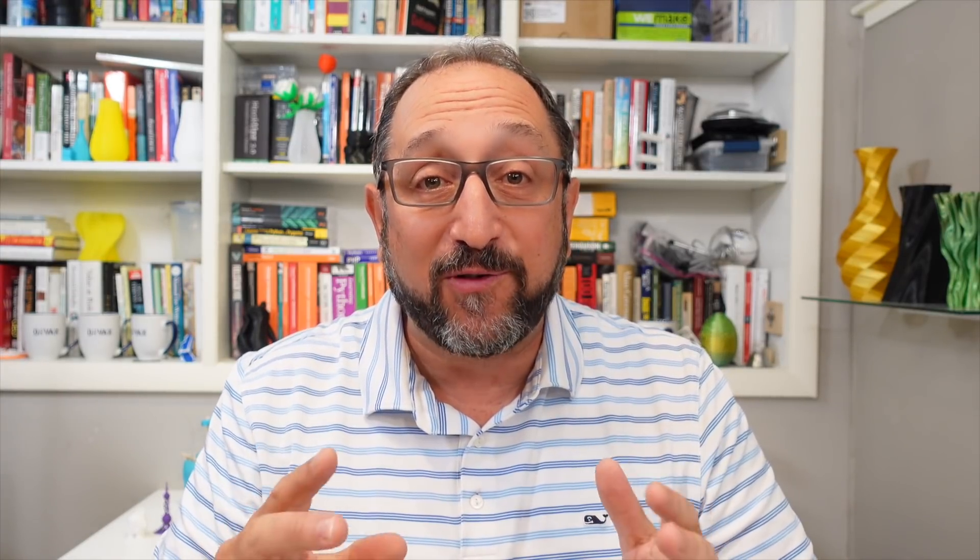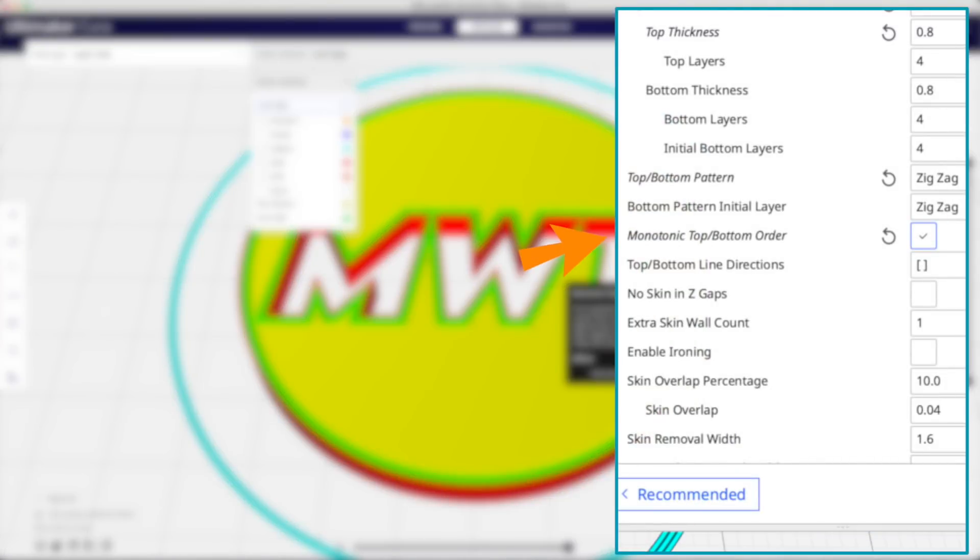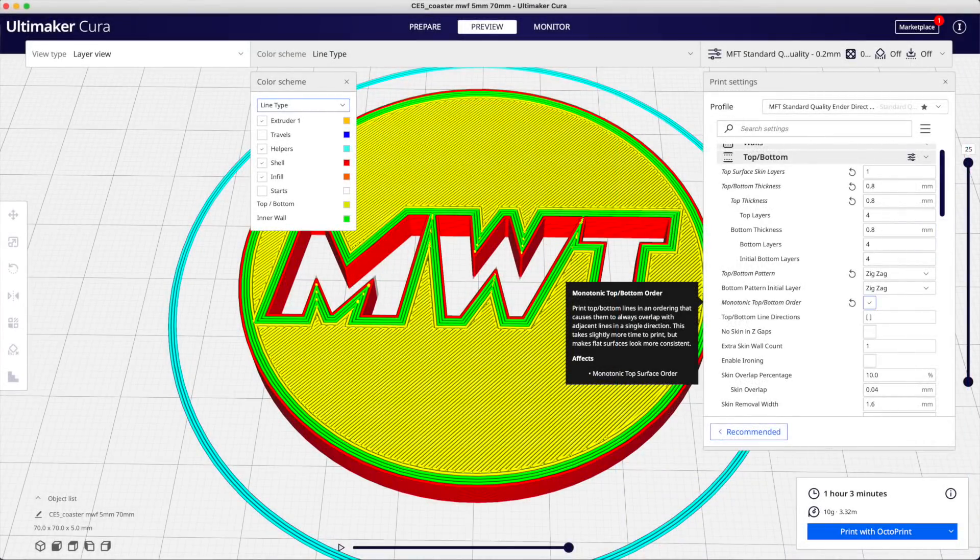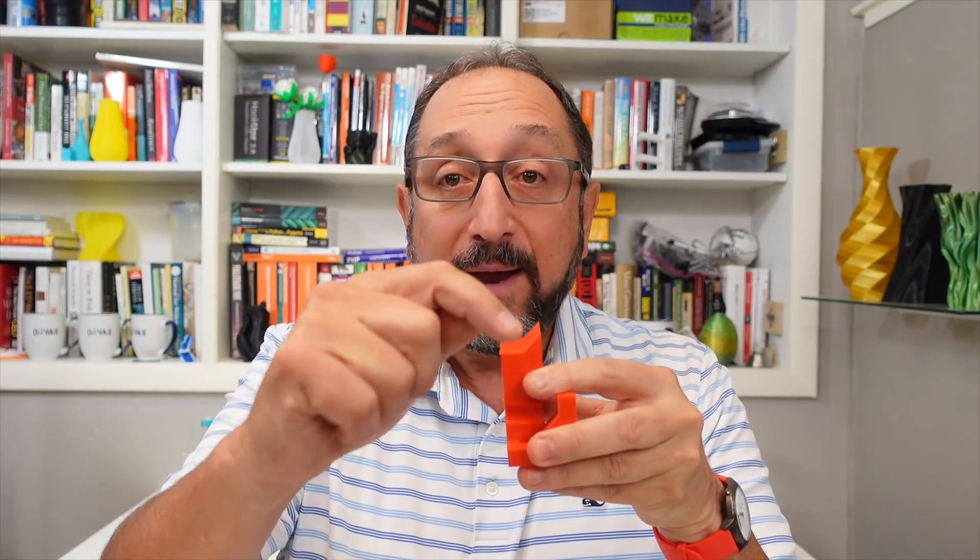Now, this next parameter is very important and it's new. And what this next parameter does is it tells the slicer to generate G-code that will attempt to print the top and bottom layers very consistently going side to side. Instead of optimizing how they're printed to reduce time, it will attempt to go in the same direction over and over again. Now, in a simple model like these coasters, it's not going to make a difference. But in a more complex model with a more complex top, ensuring the lines go in one direction only will make the model look much better.